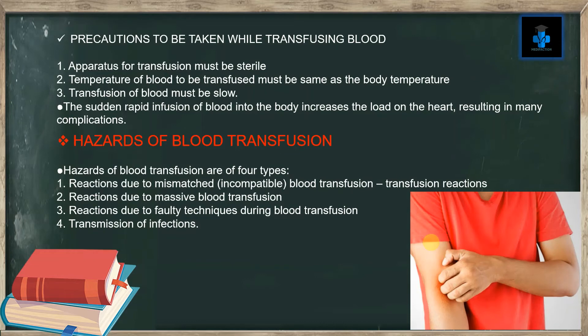Precautions to be taken while transfusing the blood: number one, the apparatus of transfusion must be sterile. Number two, the temperature of blood to be transfused must be the same as the body temperature. Number three, transfusion of blood must be slow — sudden rapid infusion of blood into the body increases the load on the heart, resulting in many complications.